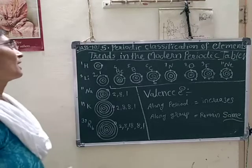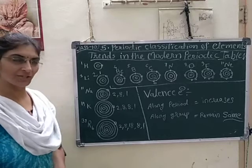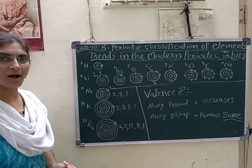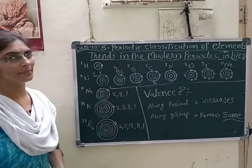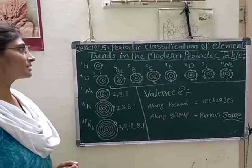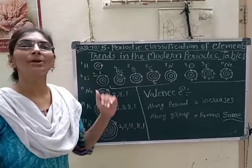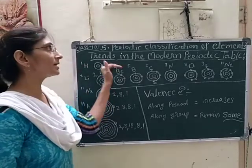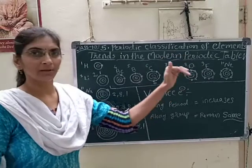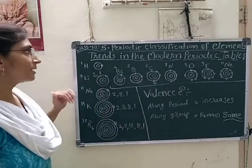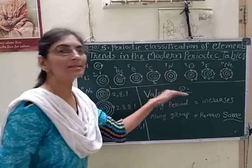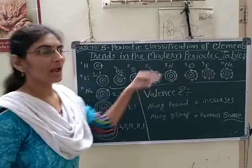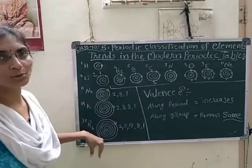Good morning students and welcome back to your chemistry lecture. Today we will see Class 10 chemistry chapter number 5, that is periodic classification of elements. We are seeing under this chapter the modern periodic table and the trends in the modern periodic table. Today we will see the trend of valence electrons along the period and along the group.